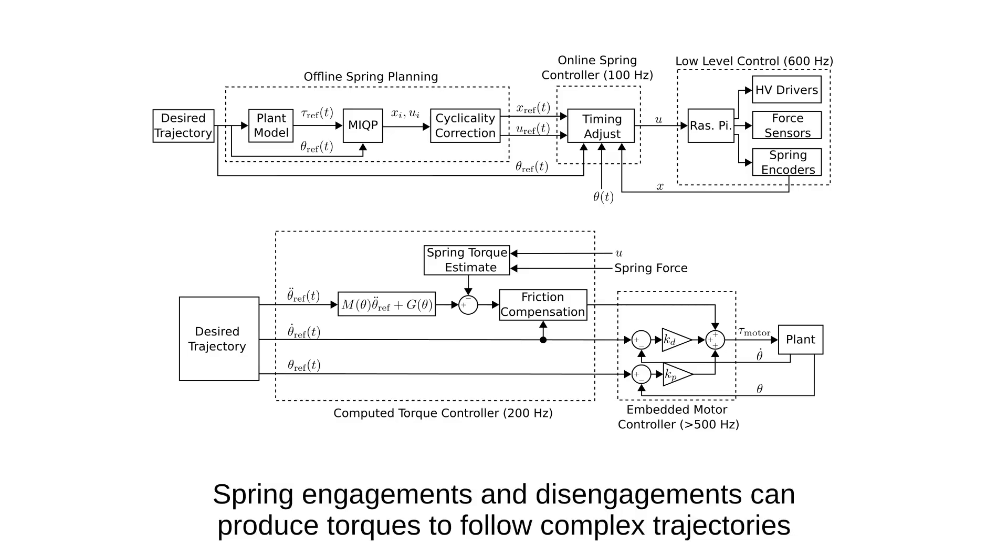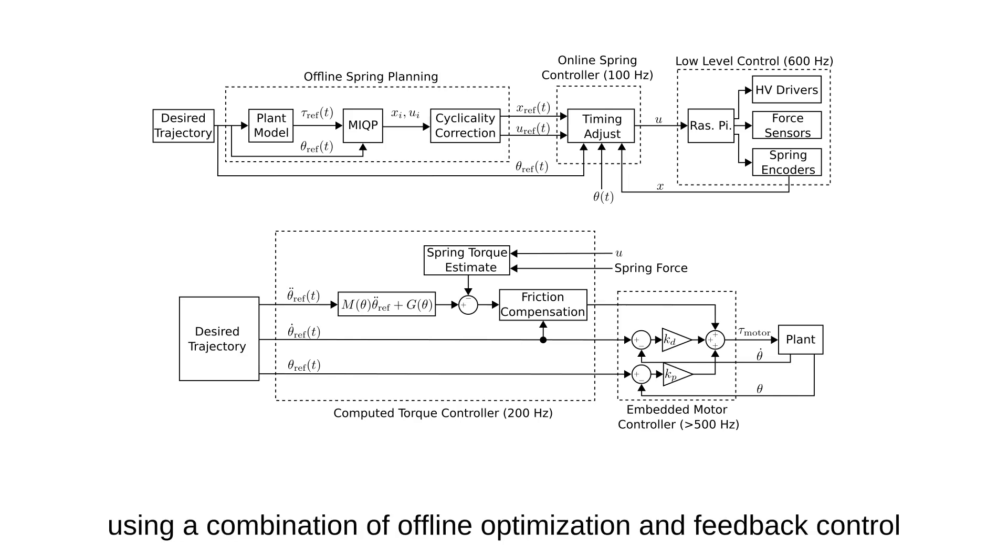Spring engagements and disengagements can produce torques to follow complex trajectories using a combination of offline optimization and feedback control.